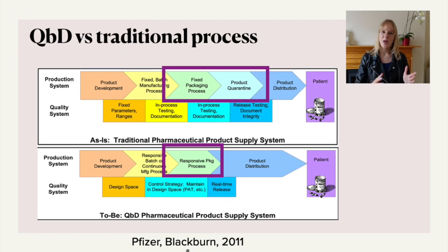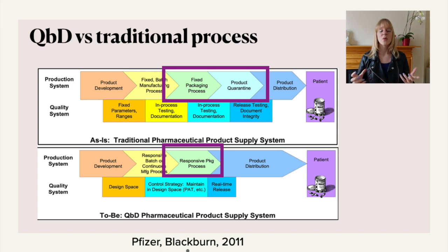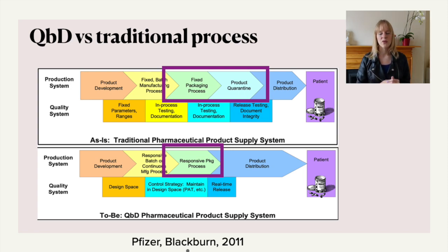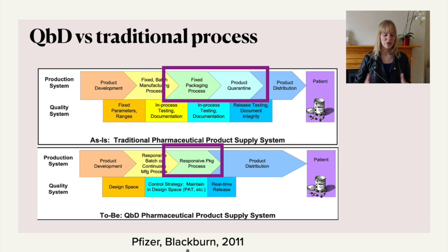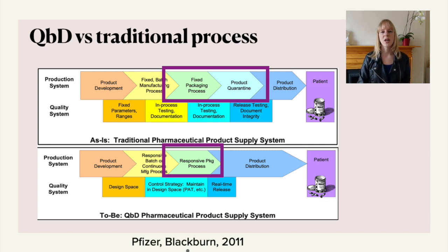Let's compare what is the normal process and how quality by design is different. Quality by design means that you have an inbuilt quality control. If you look at a normal process, you will see that you have a quality control step at the end — you produce your product, you test whether the quality is okay, and then you release it.